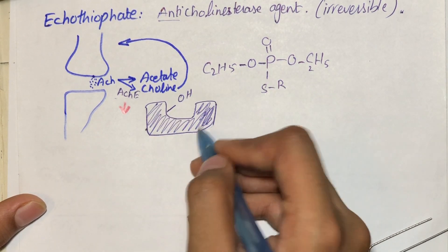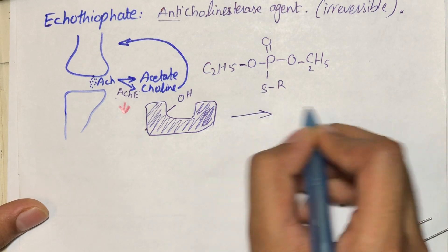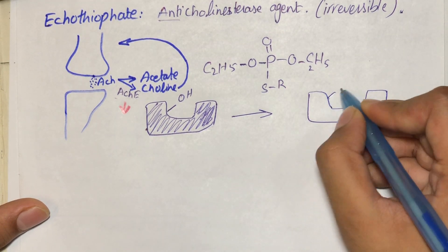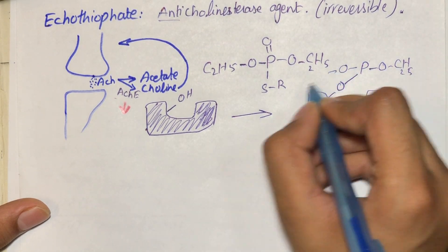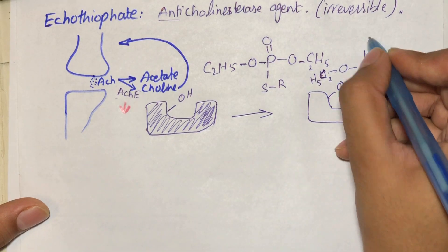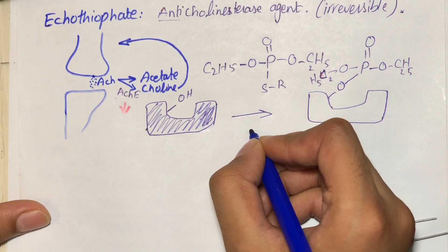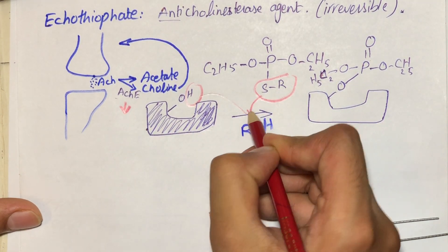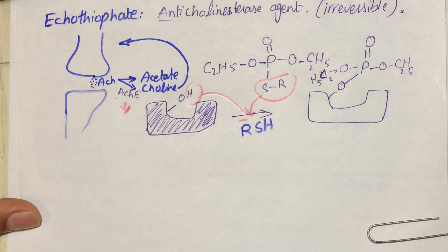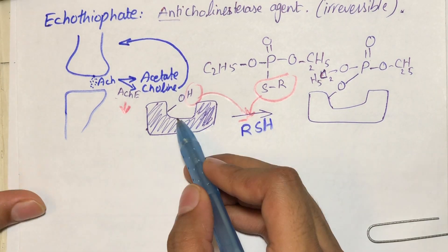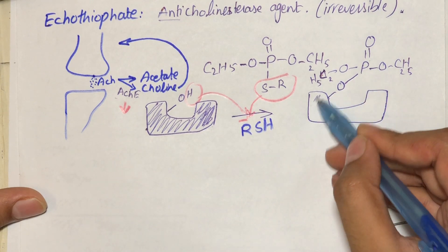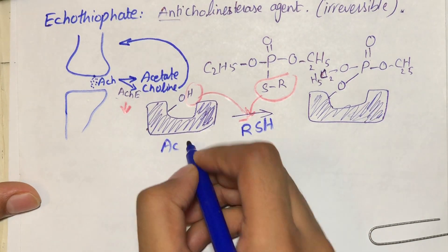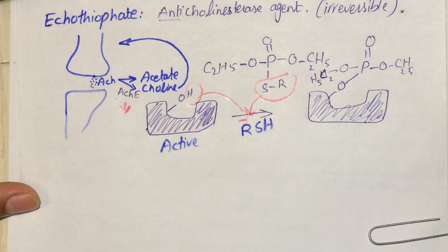When these two bind together, they release a compound and form a covalent bond between them. The released group contains H from the hydroxyl group and SR from the drug, forming RSH. In this way there is release of the RSH group and formation of a covalent bond between the drug and the enzyme.